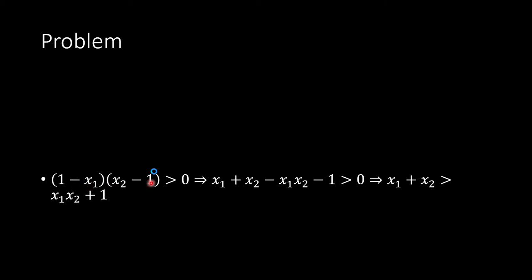Since x1 < 1 and x2 > 1, both (1 − x1) and (x2 − 1) are positive, so their product is strictly positive. Expanding this product gives x1 + x2 − x1·x2 − 1 > 0, which means x1 + x2 > x1·x2 + 1.